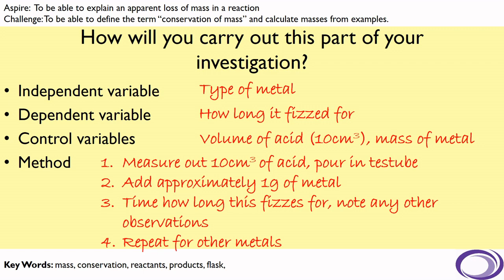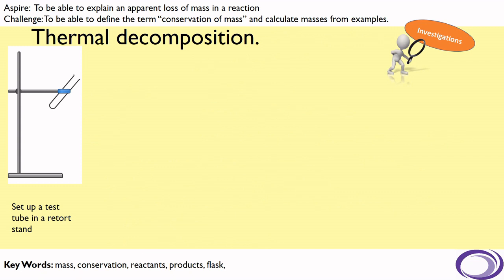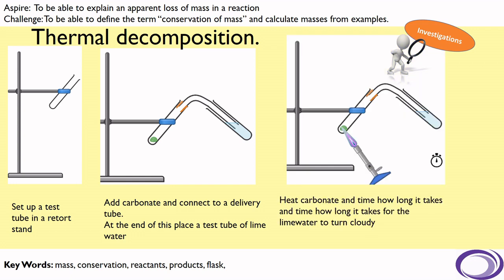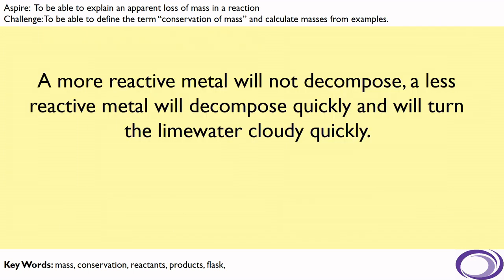Once that investigation is carried out, we will then carry out an investigation on the thermal decomposition of metal carbonates. To do that, we'd have to set up a test tube in a retort stand. We add our sample of carbonate to that test tube, and then connect it using a delivery tube into another test tube which contains lime water. Then we would heat that carbonate and time how long it takes for the lime water to turn cloudy, and repeat for other metal carbonates. A more reactive metal will not decompose. A less reactive metal will decompose quickly, meaning the lime water will turn cloudy quickly.